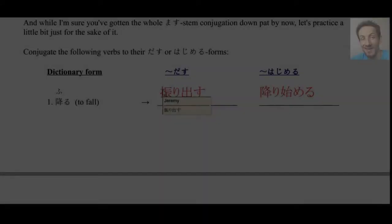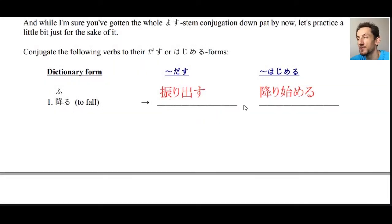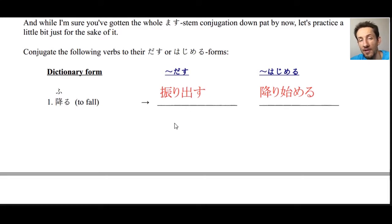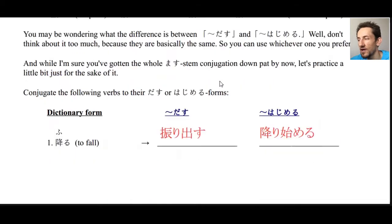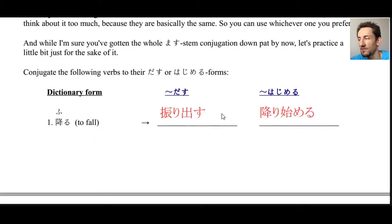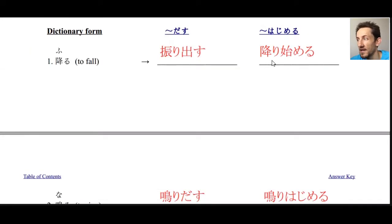Let's check the answers. Number one — please notice I've left the kanji character. Sometimes when you type, it will automatically include the kanji with dasu or hajimeru. I don't think that's wrong, but when using this structure it's more common to write it out in hiragana. You may see it written with kanji sometimes, but for the most part just use hiragana.